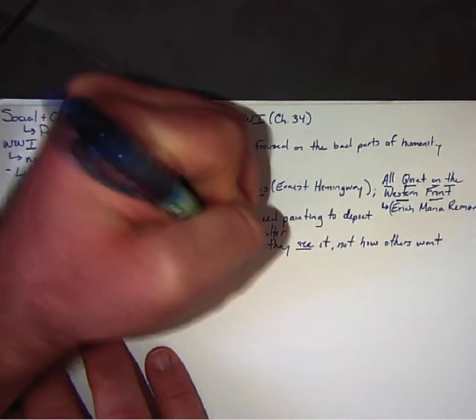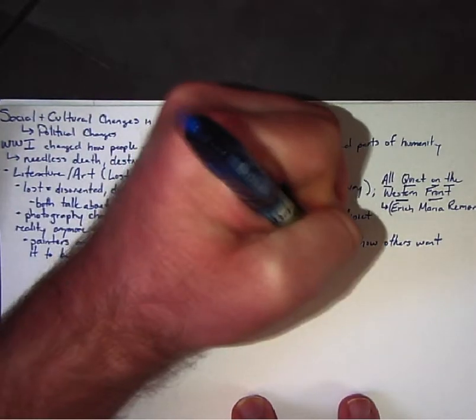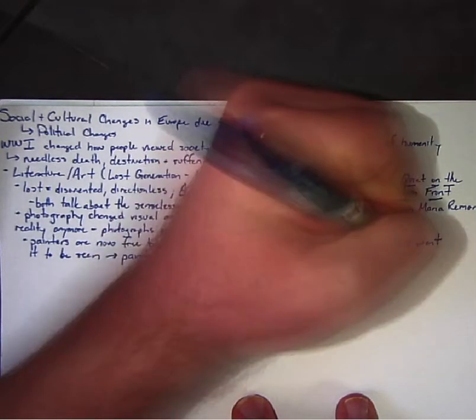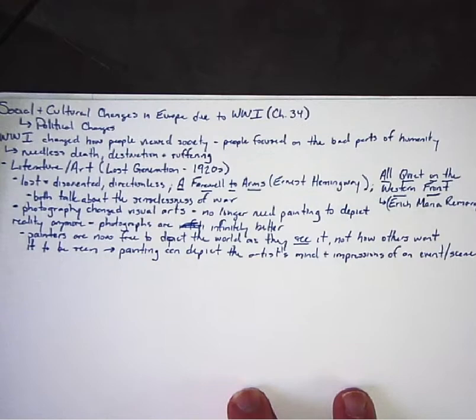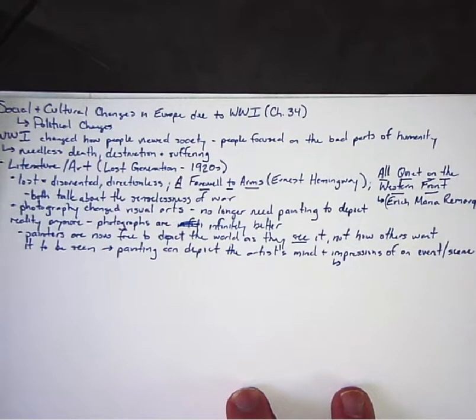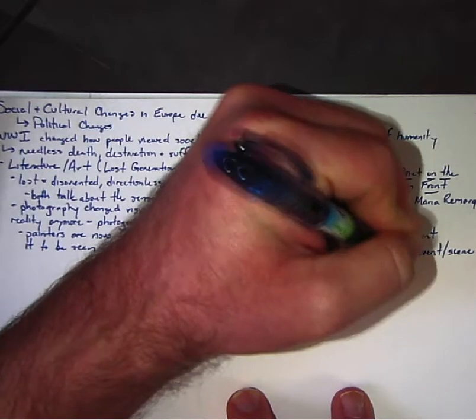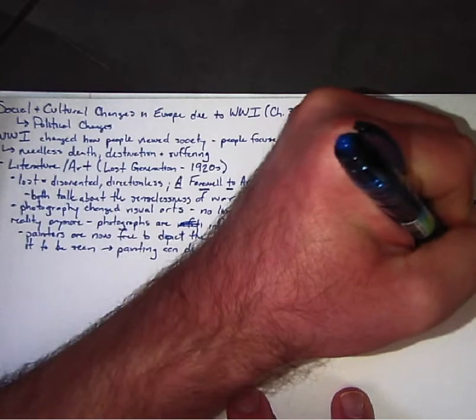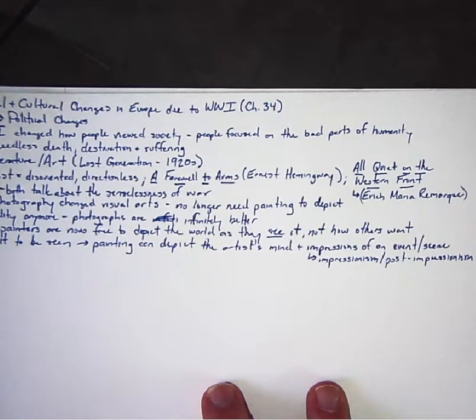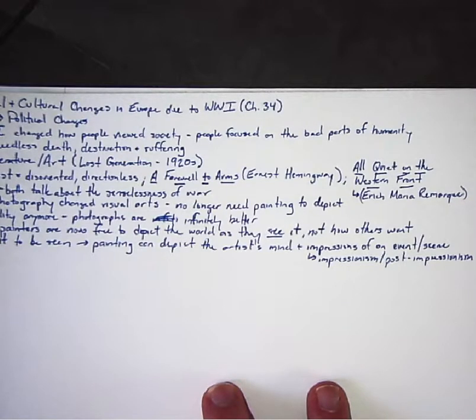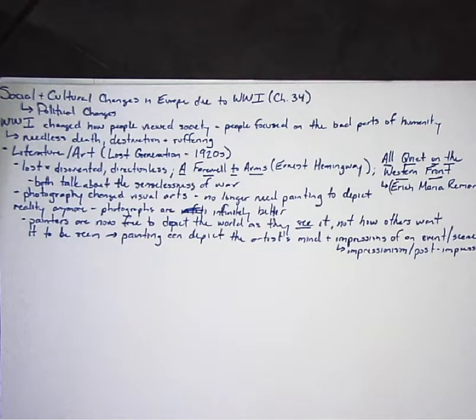Now painting can depict the artist's impressions of an event or a scene, and this gives its name to the type of art of this period: impressionism and post-impressionism.